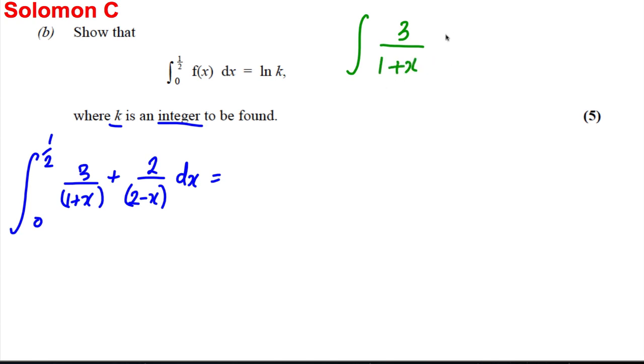3 over 1 plus x. Is the top the differential of the bottom? Well no, it isn't. If it was, it would be 1, but we've got 3 over that, so we'd multiply by 3 on the outside to adjust. So the answer to this is 3 ln 1 plus x. So this first one here must be 3 ln of mod 1 plus x. And let's do the second part. The integral of 2 over 2 subtract x dx. Is the top the differential of the bottom? No, it isn't. If it was to be, it should be negative 1. But I've got a 2 there, so I'm going to multiply by negative 2 outside. And therefore, this would be negative 2 ln of 2 subtract x.